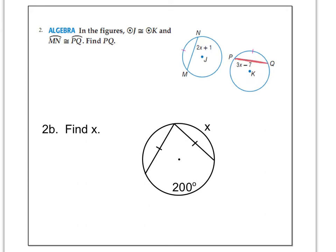Now, if the arcs are congruent, you can see the arc here. I'll highlight it. And the arc here, those are congruent. So therefore, the 2X plus 1 equals the 3X minus 7. The chords will also be congruent. So just do your normal algebra, solve for X.